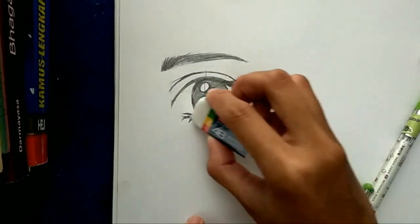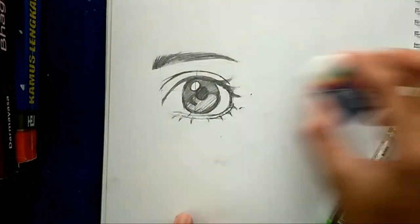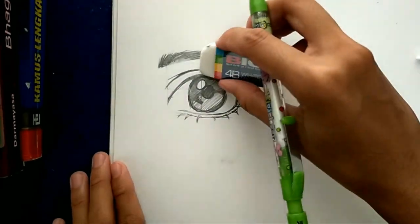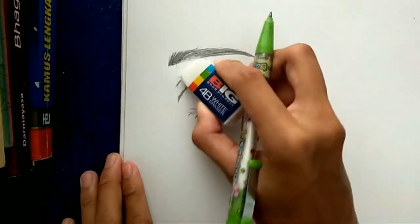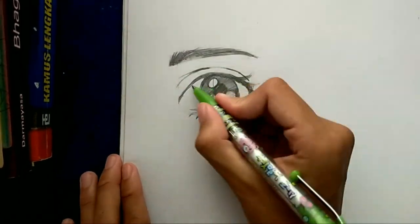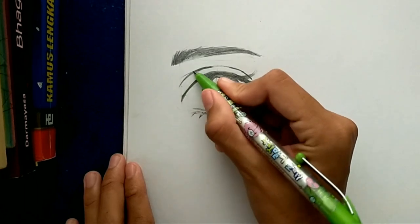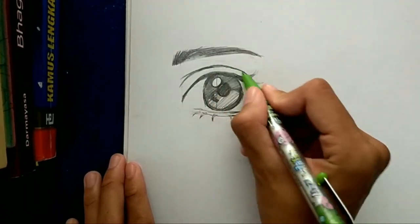And after you clear the sketch, maybe there are some parts missing. So if there are some parts missing, you can thicken it back with your pencil like this.